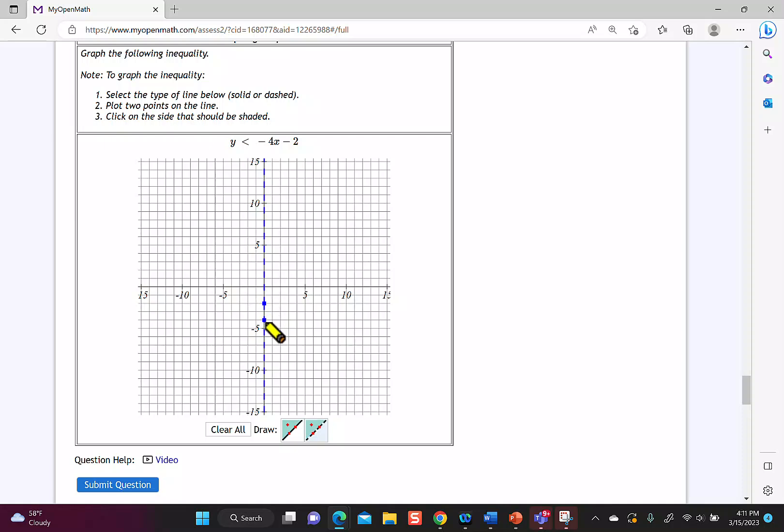So I go down 1, 2, 3, 4, and then 1 to the right. It says less than, so I shade under, and again, I submit the question.